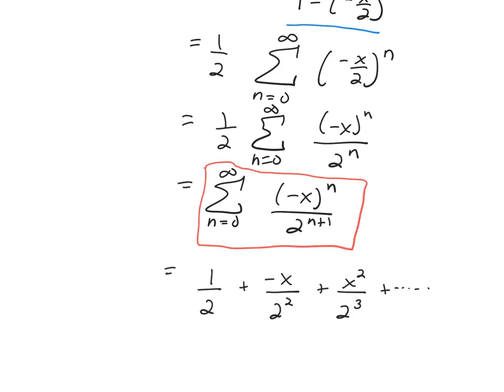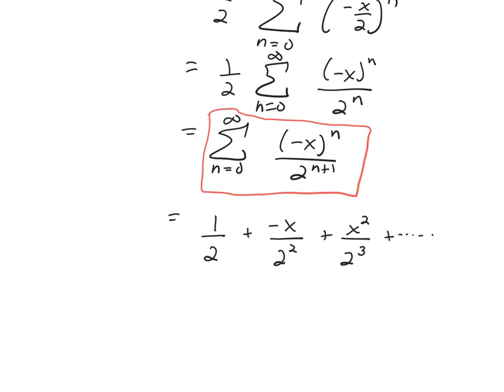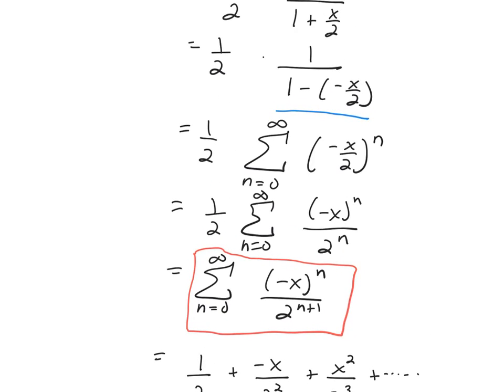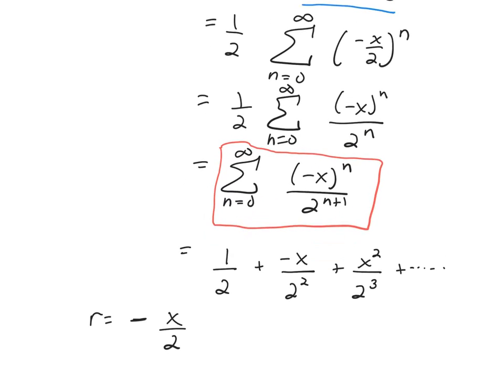Remember, this is all based off of a geometric series and what your r going to be. Well, the signs are changing, so it's alternating. So it should have a minus here. Minus x over 2, which is exactly what you had in that when you simplified it down. You had 1 minus negative x over 2. That's your r right there. 1 minus r.